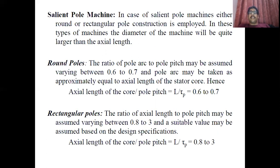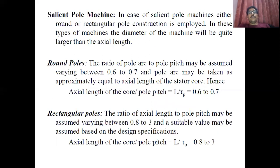The separation of D and L is done by two ways: number one, the ratio of axial length of the core to the pole pitch; and number two, peripheral speed. It depends upon the machine type. For example, in a salient pole machine — whether a rectangular pole or a round pole is used — the diameter of the machine is very large compared to its length. In that case you use L/τ to separate the diameter and core length.